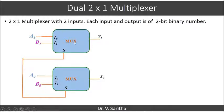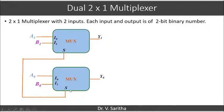A single selection line is used to select both multiplexers simultaneously. The outputs y₁ and y₀ are generated. When s = 0, a₀ comes out as y₀ and a₁ comes out as y₁. When s = 1, b₁ is output as y₁ and b₀ is output as y₀. This is the dual 2×1 multiplexer. For a quad 2×1 multiplexer, this structure is repeated 4 times.